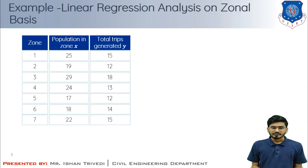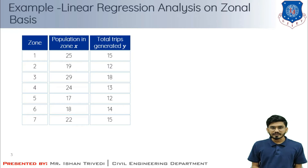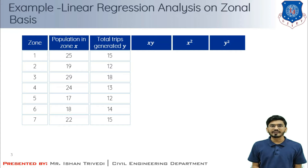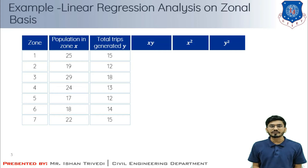We have the number of zones, the population in each zone as independent variable x, and total number of trips as dependent variable y. We also require xy, x², and y² data. To find the xy value, I multiply x and y for each zone — for example, 25 multiplied by 15. For x², I square the x value (25²), and for y², I compute 15². I do this for all 7 zones and then find the summation of all these values. Here are the computed xy, x², and y² values for each zone.